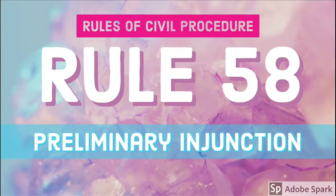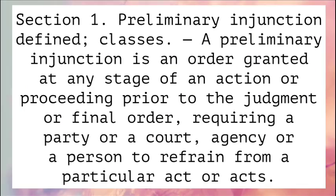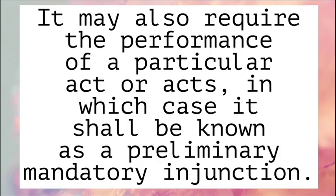Rule 58 Preliminary Injunction, Section 1. Preliminary Injunction Defined. A preliminary injunction is an order granted at any stage of an action or proceeding prior to the judgment or final order, requiring a party, court, agency, or a person to refrain from a particular act or acts. It may also require the performance of a particular act or acts, in which case it shall be known as a preliminary mandatory injunction.